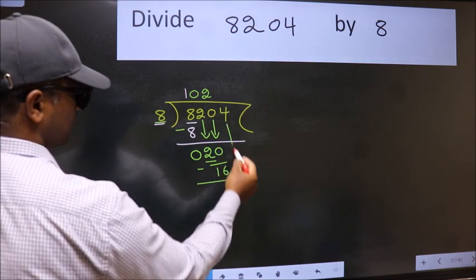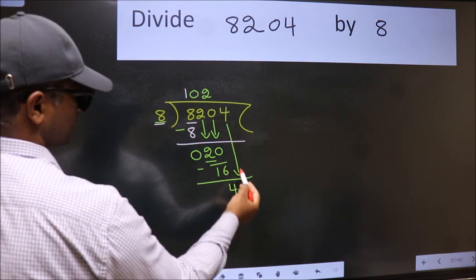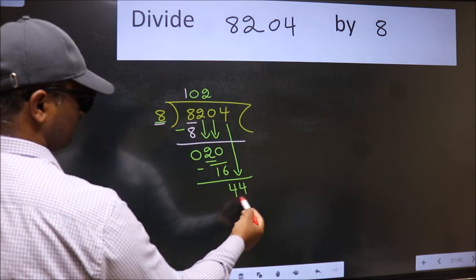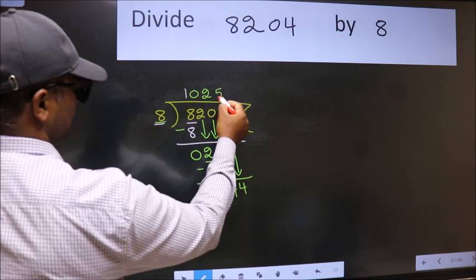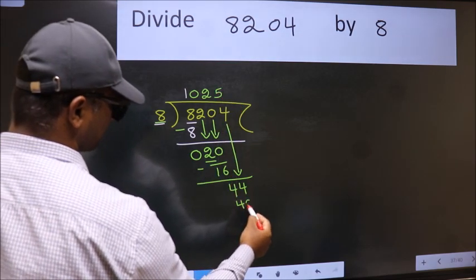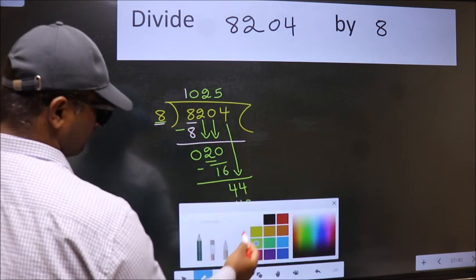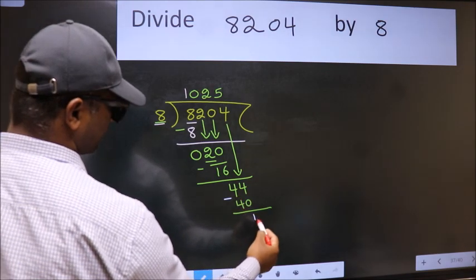After this, bring down the beside number. So 4 down. 44. A number close to 44 in the 8 table is 8 fives, 40. Now we subtract. We get 4.